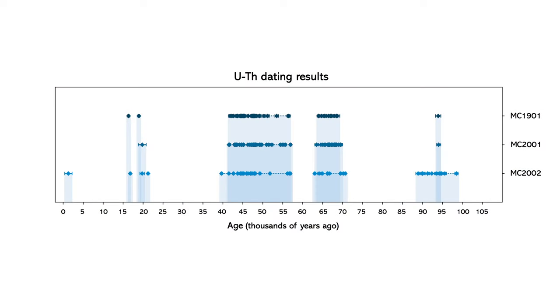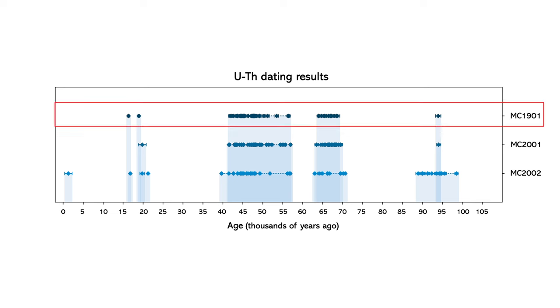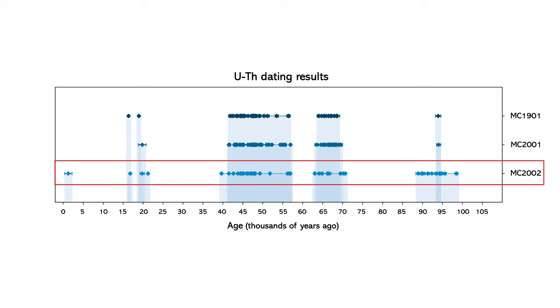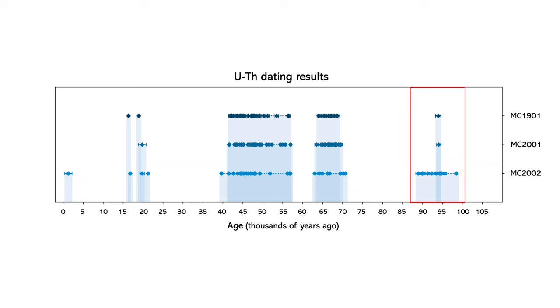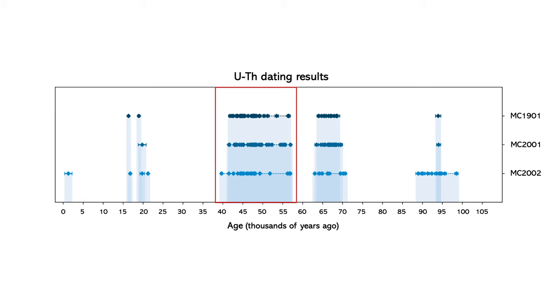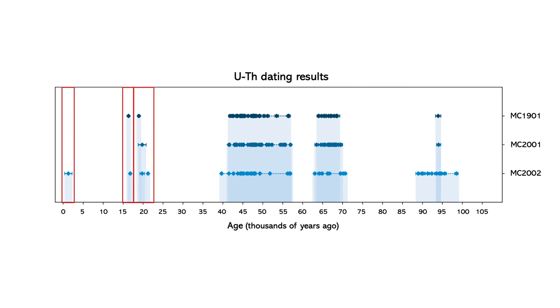We've done this repeatedly and accumulated a dataset showing phases of subaqueous speleothem growth. MC-1901 sits highest in the cave, so it's only flooded by the most extreme cave flooding events. MC-2001 is somewhere in the middle, and MC-2002 sits lowest, so it's inundated by even relatively minor flooding events. Our first phase of subaqueous growth occurred between about 100,000 and 88,000 years ago, then the next between about 73,000 and 63,000 years ago. Our longest phase occurred between about 58,000 and 39,000 years ago, and since then we've had relatively minor, short-lived cave flooding events.